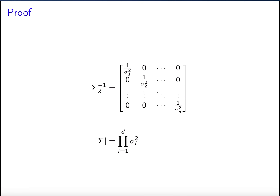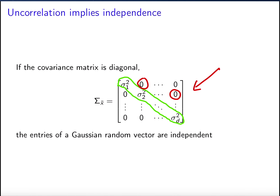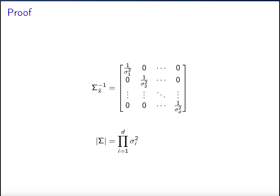When the entries are uncorrelated, the inverse of the covariance matrix is also diagonal — it's the diagonal matrix with the inverse of the diagonal entries. Also by linear algebra, the determinant of a diagonal matrix — which appears in the joint PDF expression — is simply equal to the product of the entries on its diagonal.